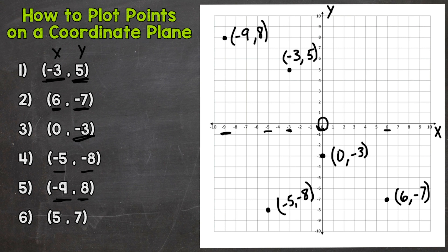Lastly, we have two positive coordinates, 5, 7. So we would go over to positive 5 here. And then up to positive 7. Plot our point. And label 5, 7.